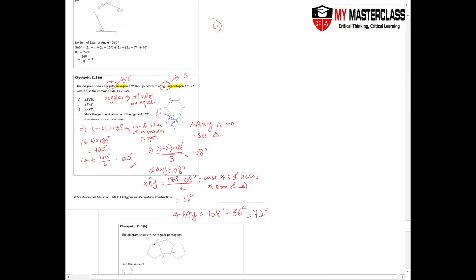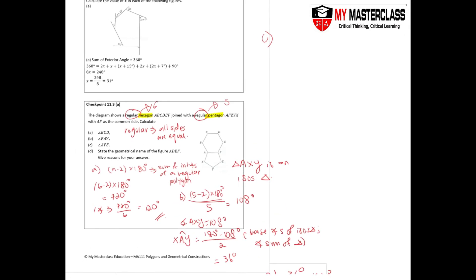Now let's look at part c, which asks for angle AYE. I'll erase the previous work and use blue for part c. Angle AYE refers to this particular angle — we cannot assume it aligns with anything. Importantly, the relevant angles on either side are equal because all sides are equal and these are isosceles triangles.